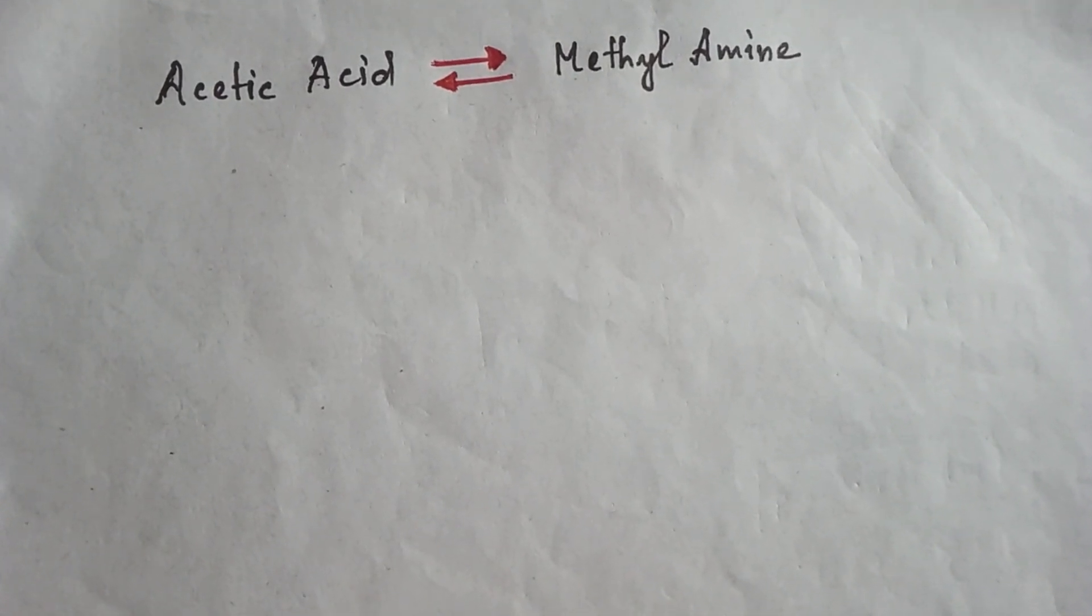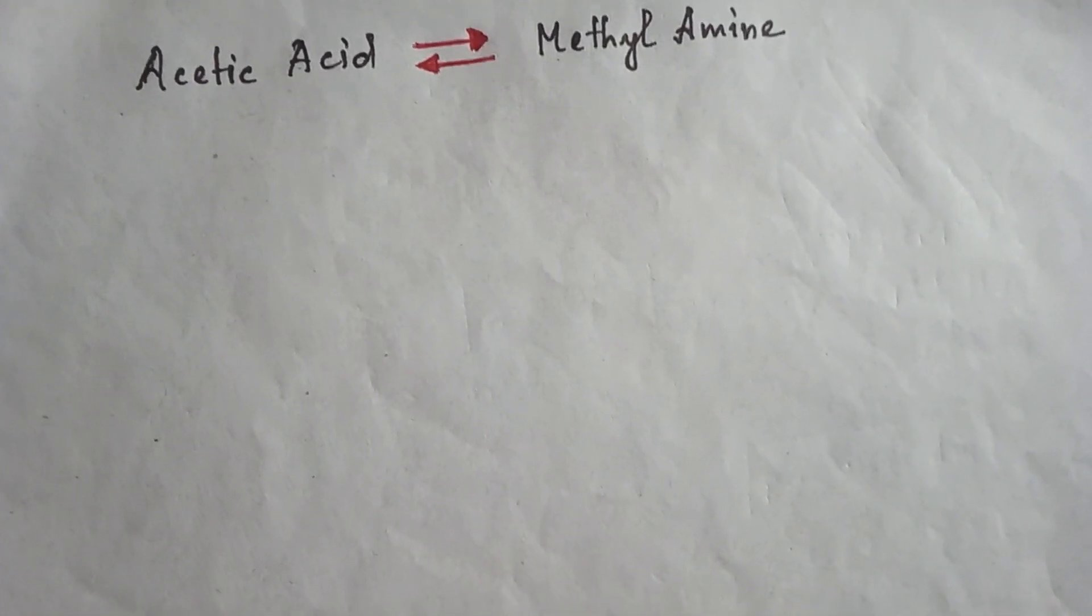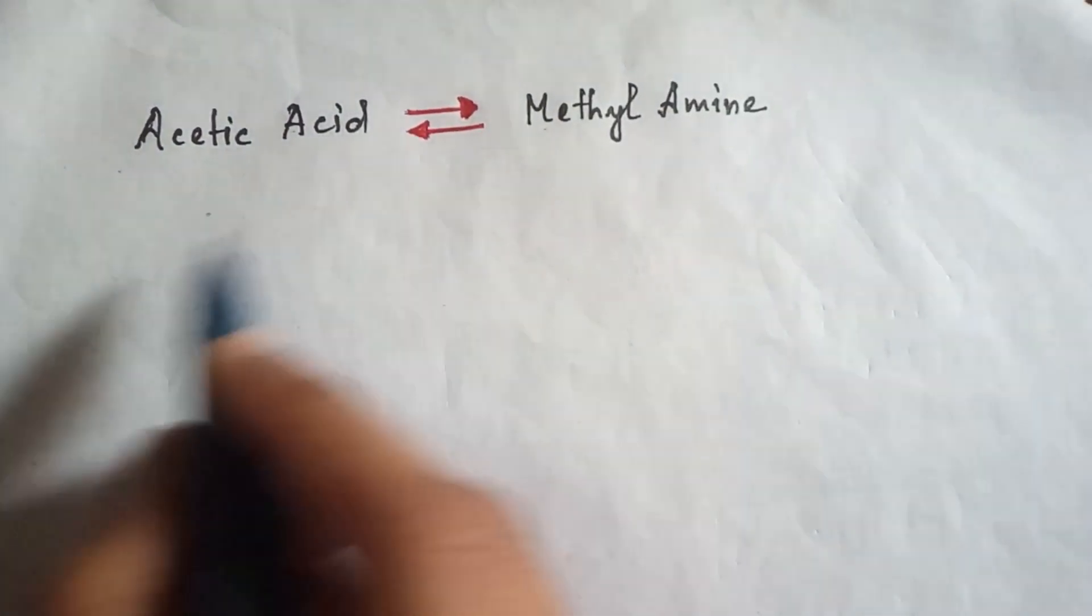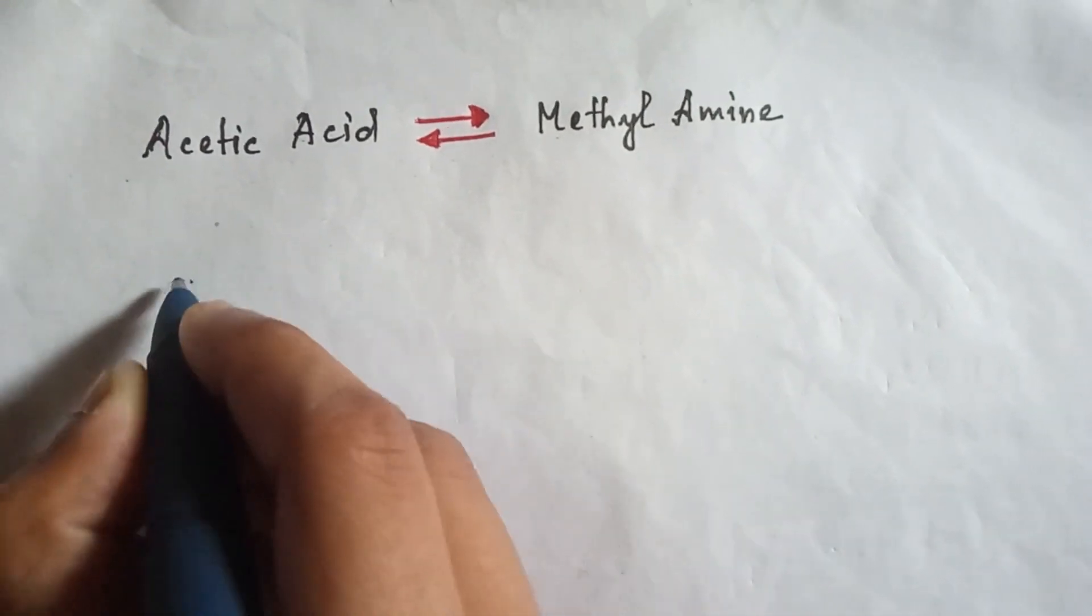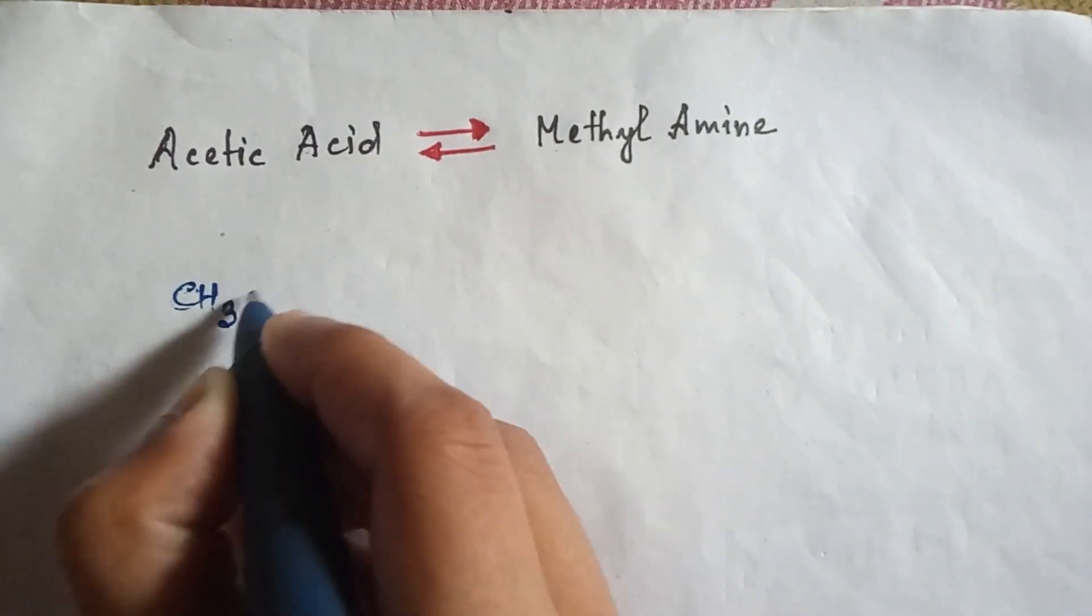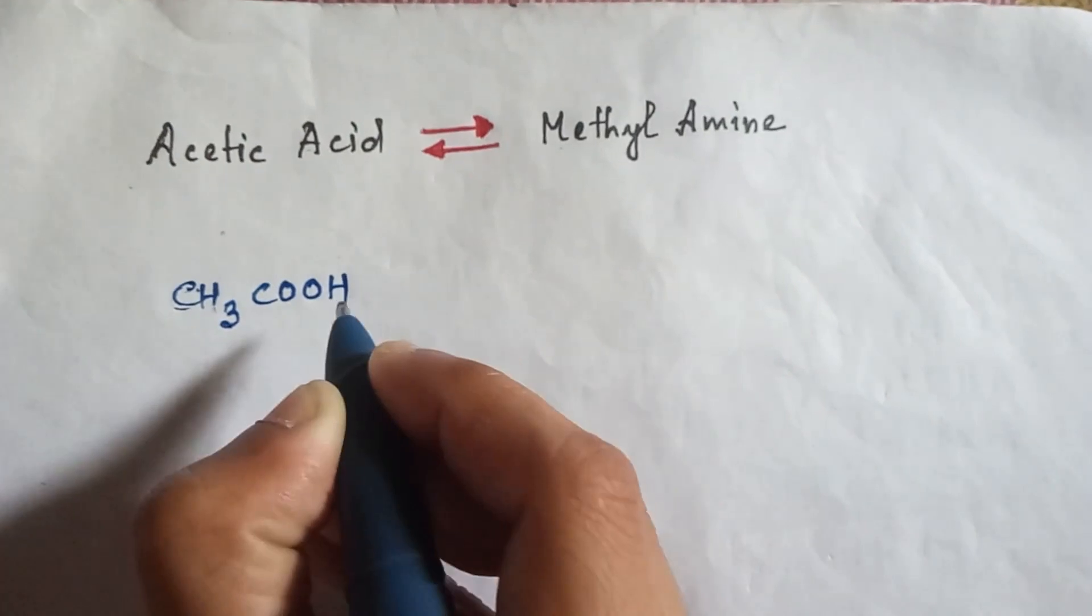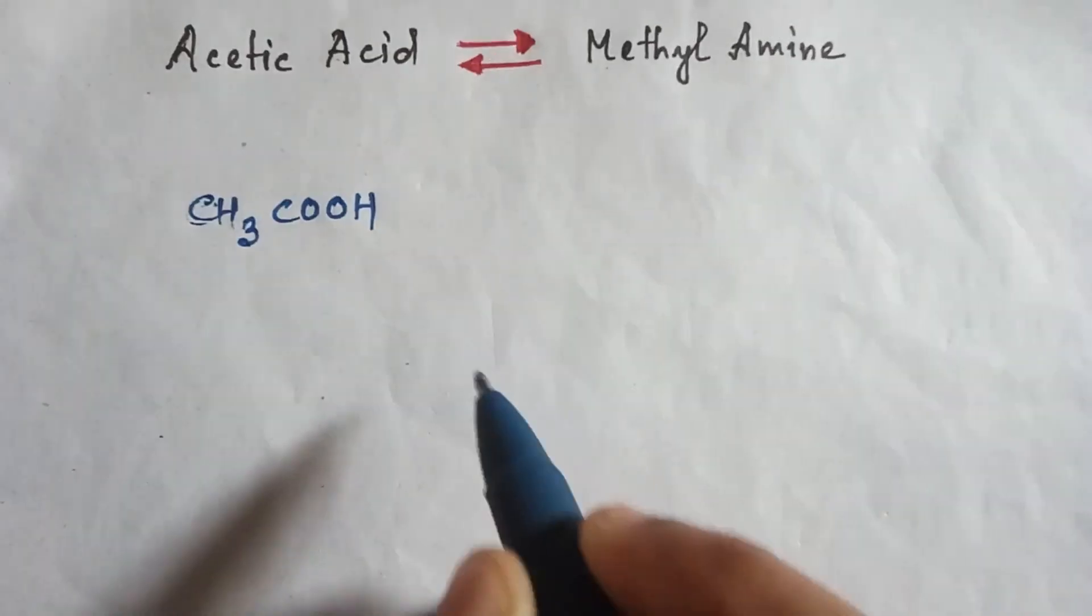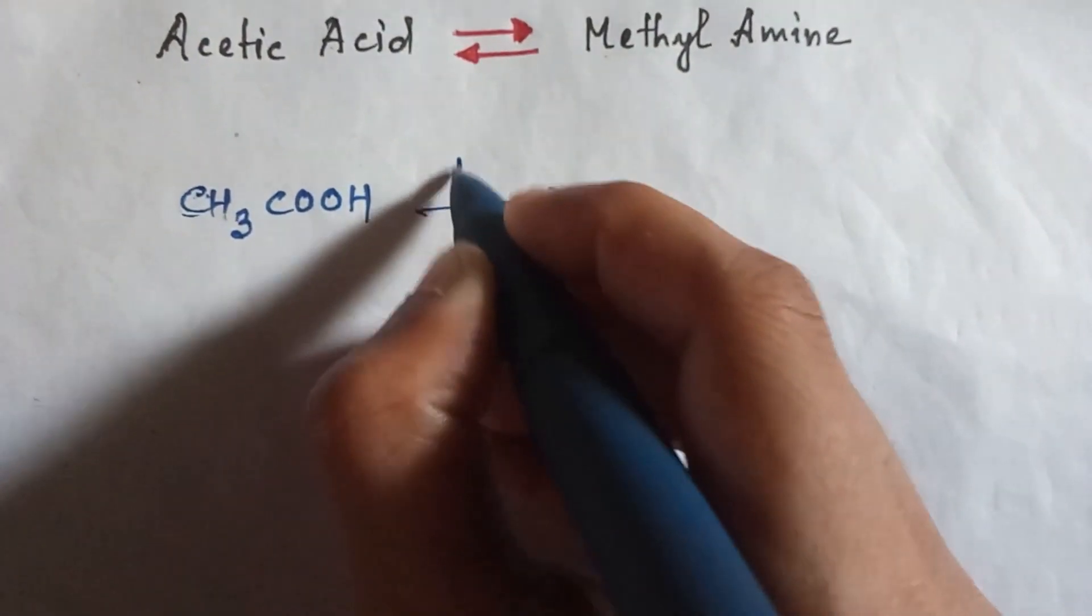That is from methyl amine to acetic acid. So let's start. First we will write the chemical formula of acetic acid: CH3COOH. This is acetic acid. If you add ammonia NH3 and give heat, then this acid group will convert into amide.